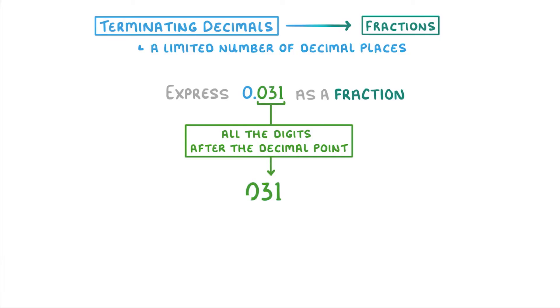This time though, we can get rid of the 0 and just write it as 31, because it's exactly the same thing. Then like always, we put a 1 as our denominator, and work out how many zeros we need to add.